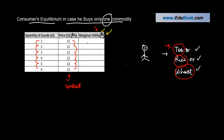As the number of units consumed increases, marginal utility declines. For example, at one unit the marginal utility was 16, at two it was 13, at three it was 12, at four it was 10, and at five it was 8. This is the incremental utility a consumer derives as consumption of goods and services increases.